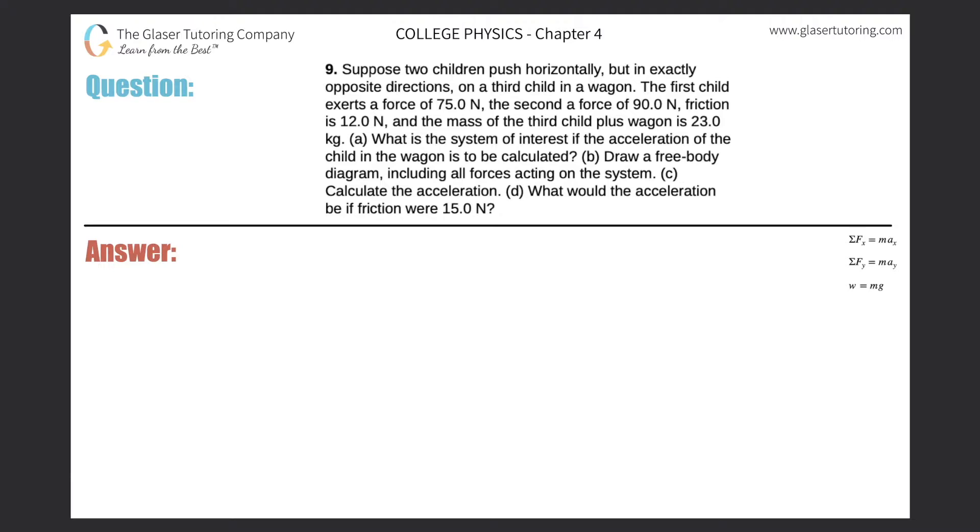Number nine, suppose two children push horizontally, but in exactly opposite directions, on a third child in a wagon. The first child exerts a force of 75 newtons, the second a force of 90 newtons, friction is 12 newtons, and the mass of the third child plus the wagon is 23 kilograms.